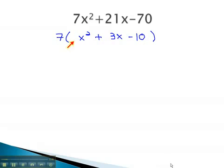Now that the GCF is out of there, we notice there is a 1 as a coefficient in front of the x². This is nice because it makes the factoring much quicker.